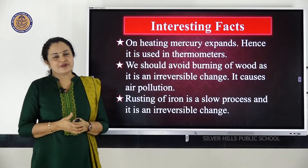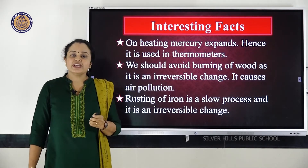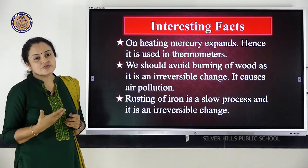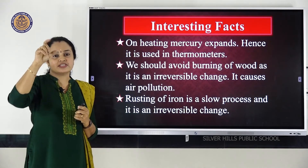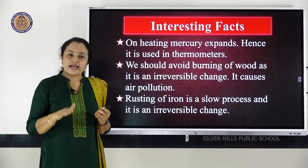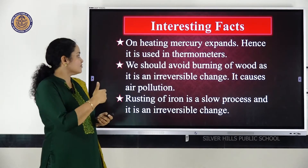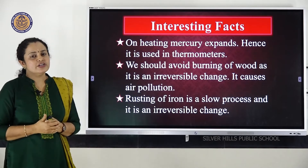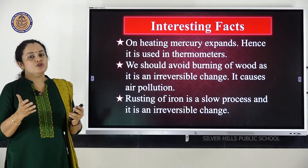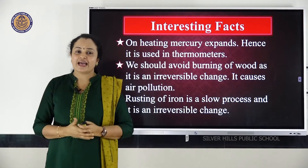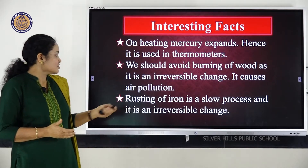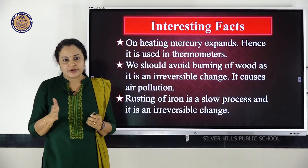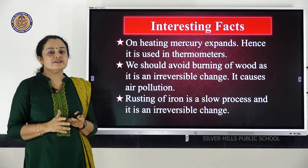It is the expansion and contraction of mercury which we make use in thermometers. When the temperature of the body increases, the mercury expands and increases in level, showing the temperature. When the temperature goes down, it contracts. We should avoid burning of the wood — burning of the wood is definitely an irreversible change or a chemical change, but it pollutes the environment. Rusting of iron is another slow process and it is also an irreversible change — you can only prevent it by painting or similar means.